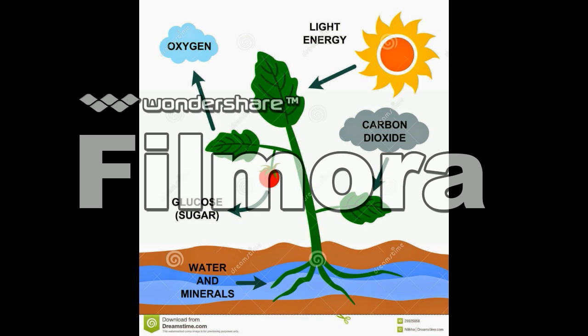Photosynthesis involves the use of carbon dioxide, water, and sunlight to form organic matter, and also produces oxygen. Vegetables, due to the chlorophyll in their leaves, capture sunlight and carbon dioxide.